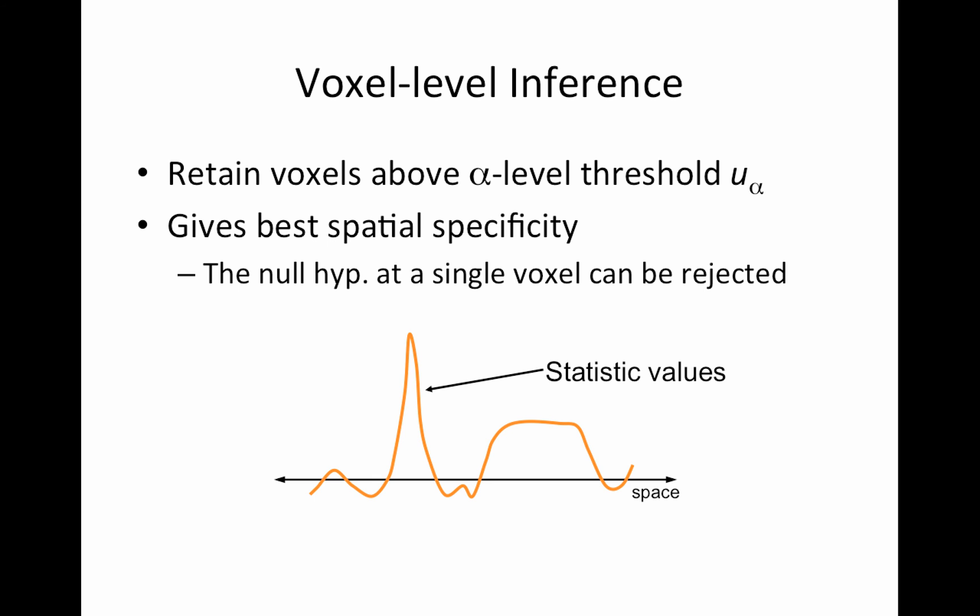Starting with the voxel level inference. This just does intuitively probably what you think about doing with your image. So what I'm showing here, just for illustrative purposes, this is just a line of voxels over space. So just one row and one slice, and I'm plotting the t-statistics here. You might wonder, well, why are they continuous? Just pretend I have really small voxels. So these are the statistic values that we would view in a map, typically.